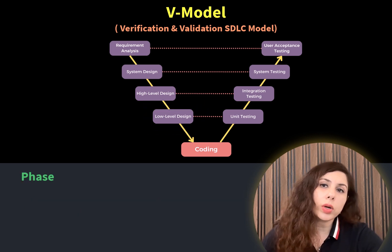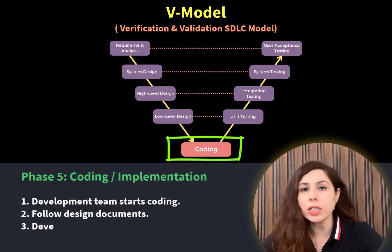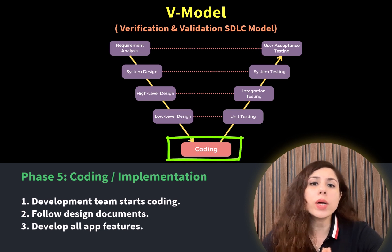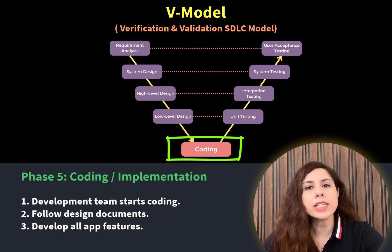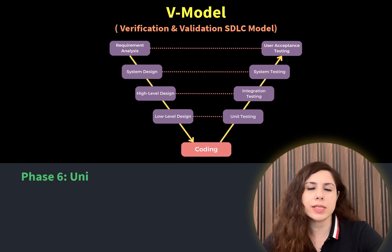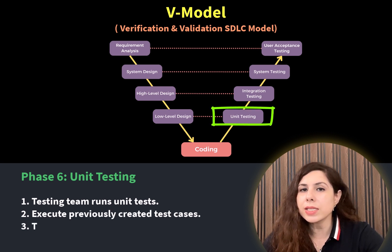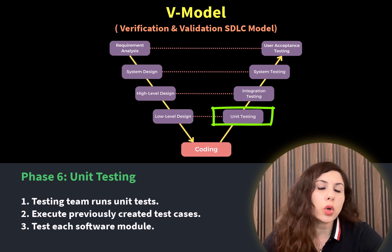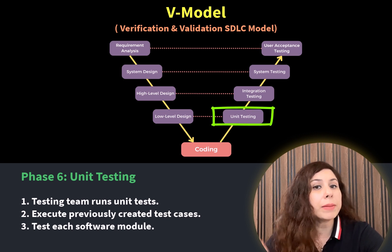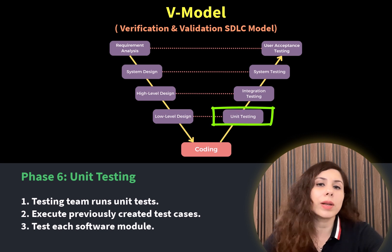The next phase is the coding phase. The development team starts coding based on design documents and develops all the features of the app. Once coding is done, the next phase — the start of the validation phases — is unit testing. In this phase, the testing team runs unit test cases for each module of the software. These unit test cases were created earlier in parallel with the low level design, and now they are executed.